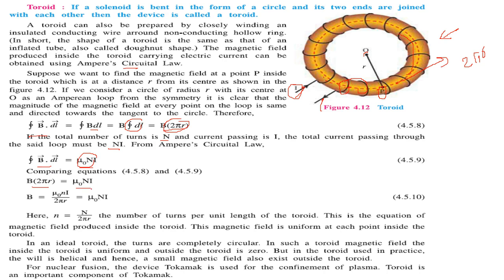B into 2πr equals μ₀NI, so B equals μ₀NI by 2πr. Here, n is the number of turns per unit length of the toroid. This is the equation of magnetic field produced inside the toroid.